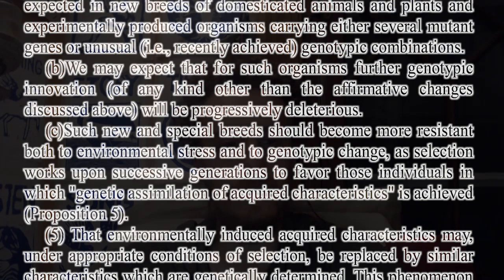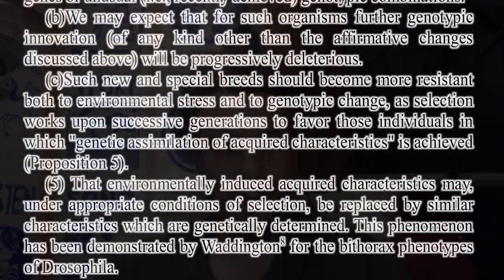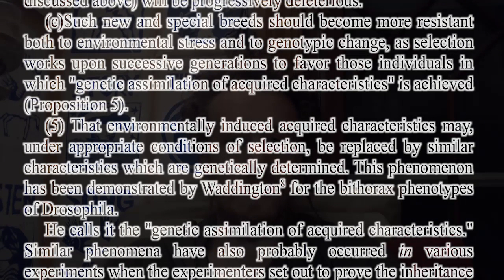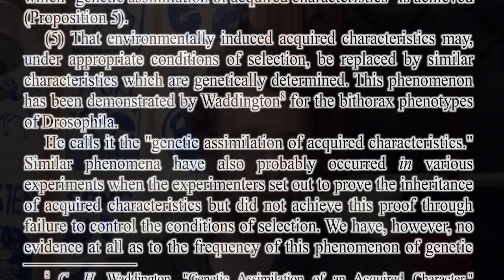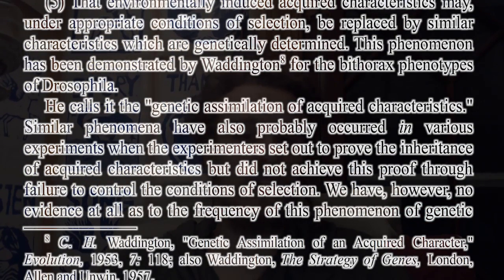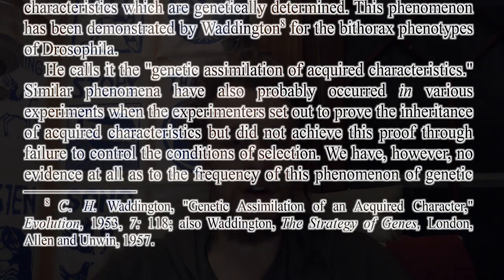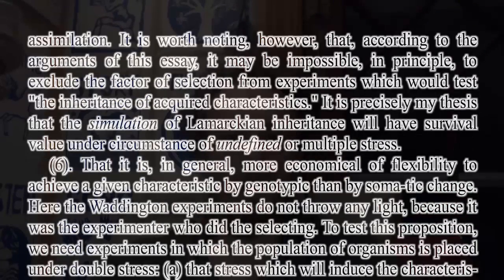Proposition 5. That environmentally induced acquired characteristics may, under appropriate conditions of selection, be replaced by similar characteristics which are genetically determined. This phenomenon has been demonstrated by Waddington for the bithorax phenotypes in Drosophila. He calls it the genetic assimilation of acquired characteristics. Similar phenomena have also probably occurred in various experiments when the experimenters set out to prove the inheritance of characteristics but did not achieve this proof through their failure to control the conditions of selection. We have, however, no evidence at all as to the frequency of this phenomenon of genetic assimilation. It is worth noting, however, that according to the arguments of this essay, it may be impossible in principle to exclude the factor of selection from experiments which would test the inheritance of acquired characteristics. It is precisely my thesis that the simulation of Lamarckian inheritance will have survival value under circumstances of undefined or multiple stress.